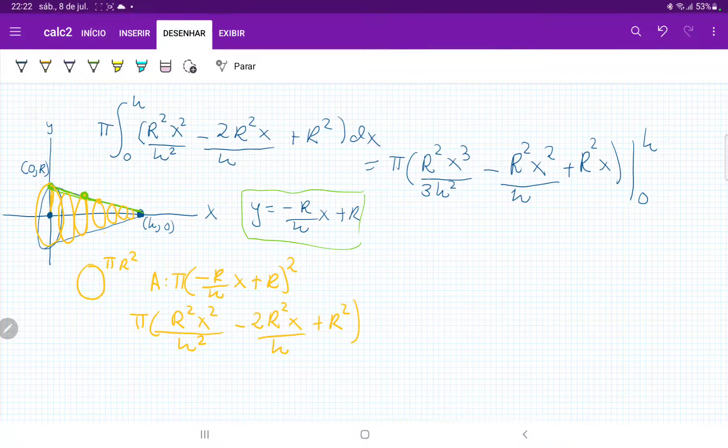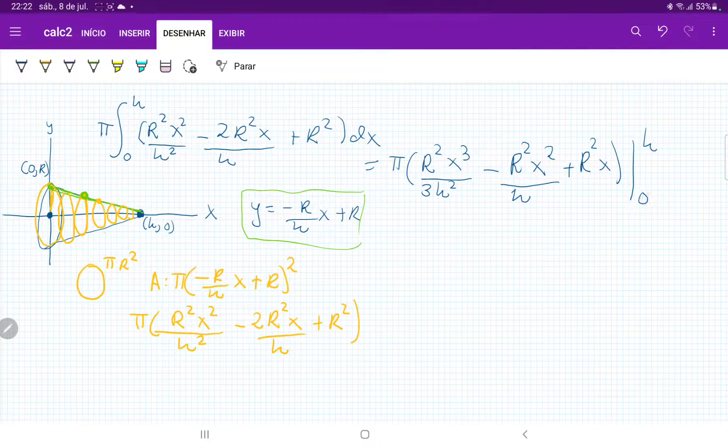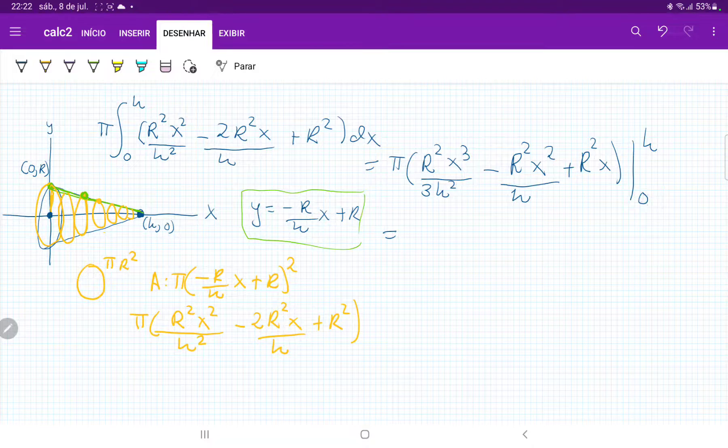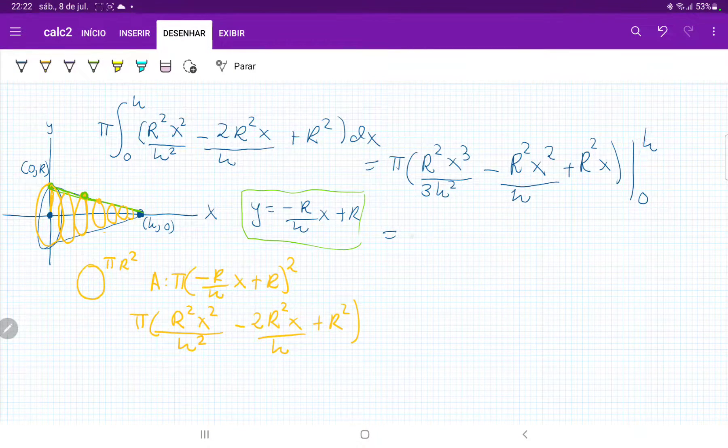and all of this from 0 to h. So when we evaluate these boundaries, the lower boundary is going to disappear because all the x's are going to go to 0.